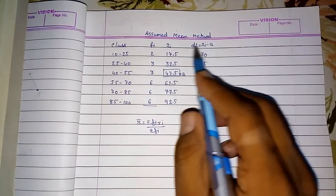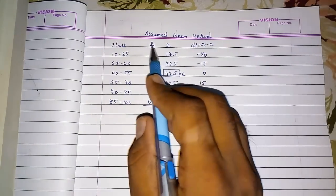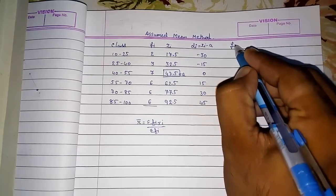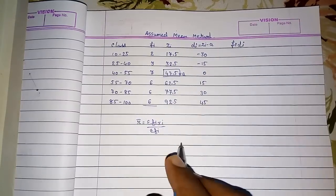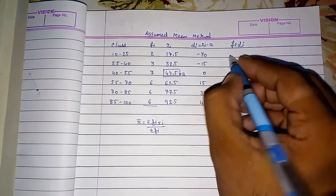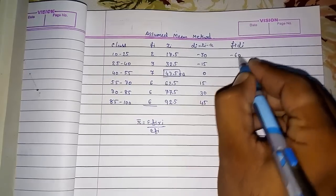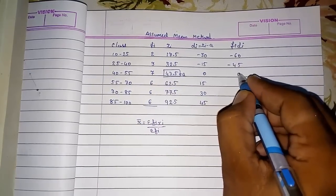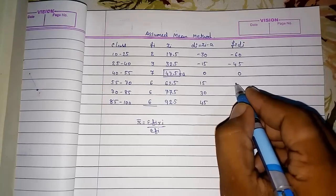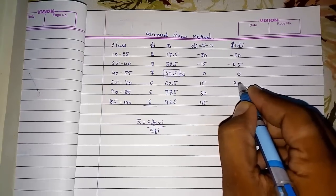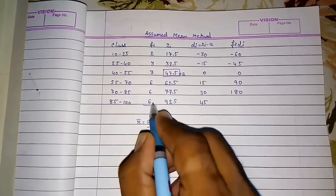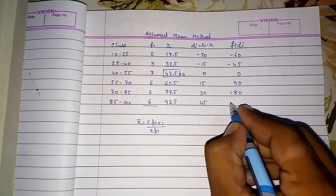So previously we were multiplying fi xi. Now we had made this number smaller, so now we are going to multiply this fi into di. This is fi di. Come on, multiply: 2 into minus 30 is minus 60, minus 45, 3 into 15, 7 into 0 is 0, 6 into 15, 6 into 90, 6 into 30, we can see 180, 6 into 45 is 270.